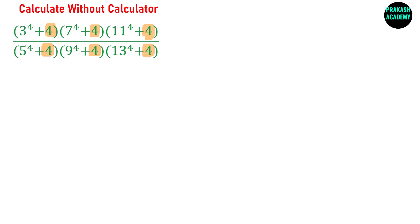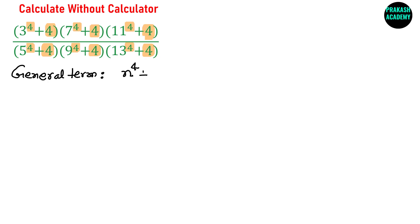The second thing we observe is that in each term the first number is raised to the power 4. We can take advantage of this and write a general term. In general, a term can be written as n raised to the power 4 plus 4.